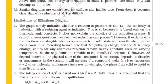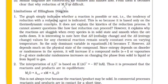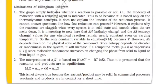Similar diagrams are constructed for sulfides and halides. From them it becomes clear why reduction of MxO is difficult. The graph simply indicates whether a reaction is possible or not. Limitations of Ellingham diagram. The tendency of reduction with a reducing agent is indicated. This is so because it is based only on the thermodynamic concepts. It does not explain the kinetics of the reduction process. It cannot answer questions like how fast reduction can proceed. However it explains the reaction as sluggish when every species is in solid state and smooth when the ore melts down.